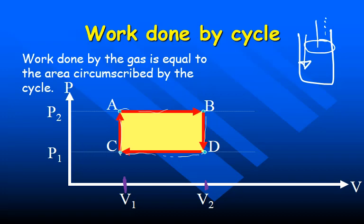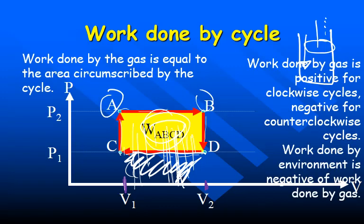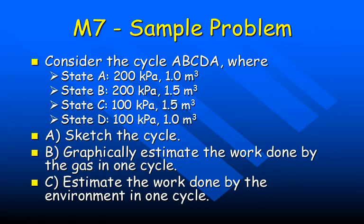From C to A, pressure increases while volume stays fixed. Looking at the full cycle A→B→D→C→A, the total area from A to B represents work, but the negative work from D to C must be subtracted out. The area inside the cycle is the actual net work done. Problem M7 asks you to sketch this graph and determine how much work is done in the cycle.